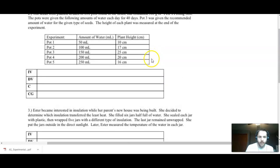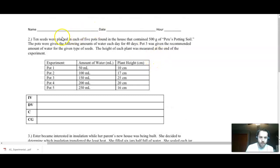Let's try another one here. Again, I'm going to ask that you pause the video, read through this, and then come back for the explanation. Ten seeds were planted in each of five pots found in the house that contained 500 grams of peat potting soil. The pots were given the following amounts of water each day for 40 days. Pot 3 was given the recommended amount of water for the given type of seeds. The height of each plant was measured at the end of the experiment. Independent variable, what is the researcher changing? We can clearly see the data shows that they are changing the amount of water. What are they measuring a change in, our dependent variable? They are measuring a change in the plant height. So does changing the amount of water given affect the plant height?